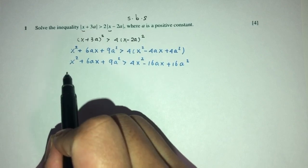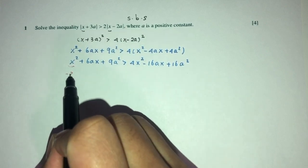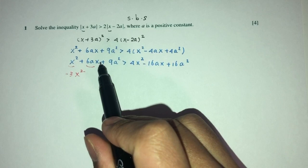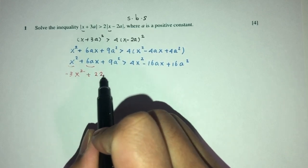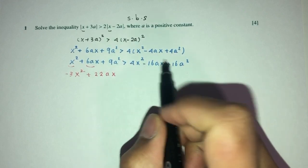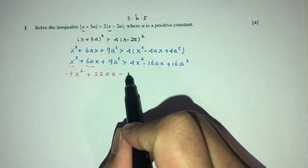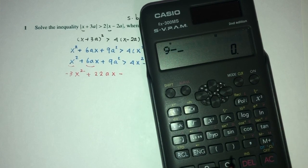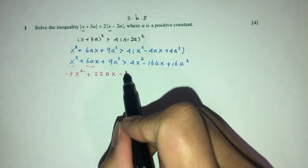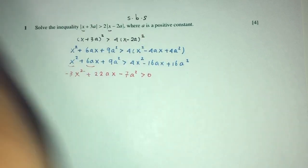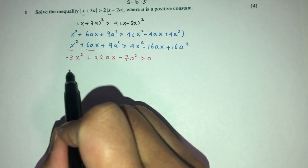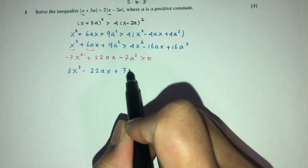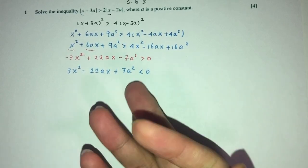Sending everything to one side: 1 − 4 gives −3x². Then 6ax becomes +22ax after combining with +16ax. And 9a² − 16a² gives −7a². So we have −3x² + 22ax − 7a² > 0. Changing the sign gives 3x² − 22ax + 7a² < 0.